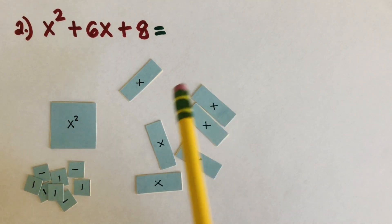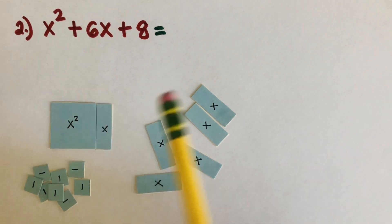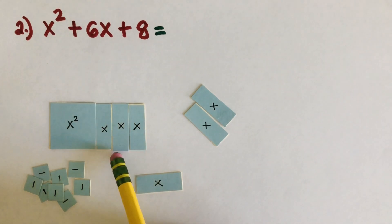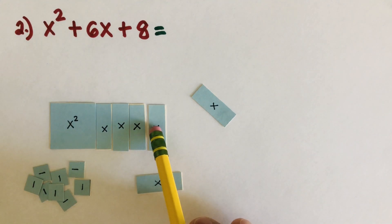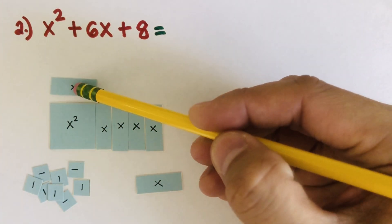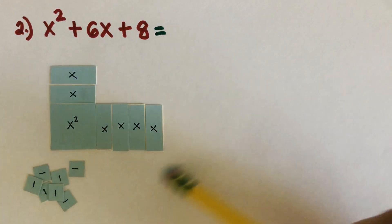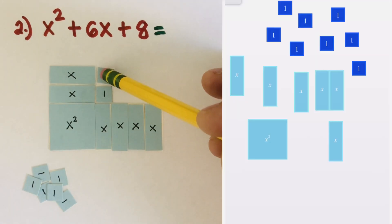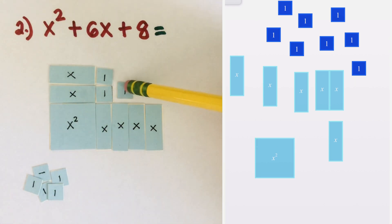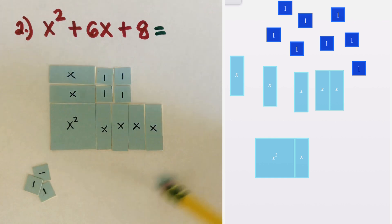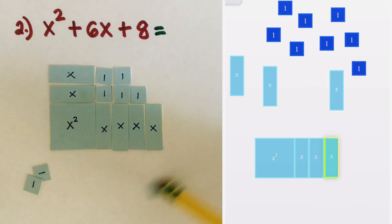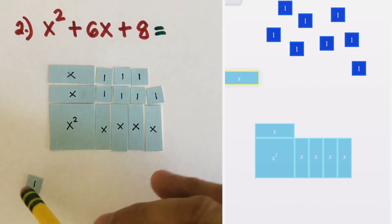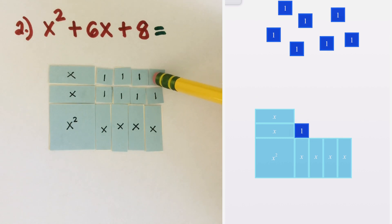Now I'm going to arrange the x's next to the x squared tile. You can try it any way you want — our target is to come up with a rectangle. I'll take an x here, another x on top, and then place the ones. This is already a rectangle.